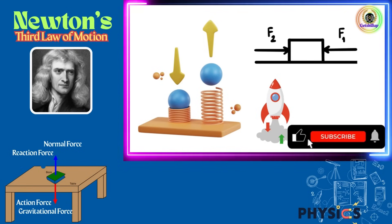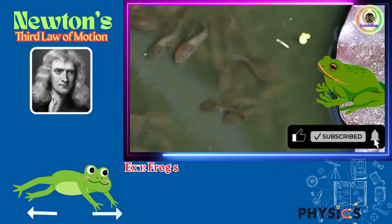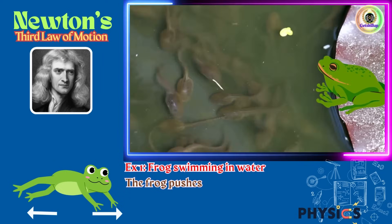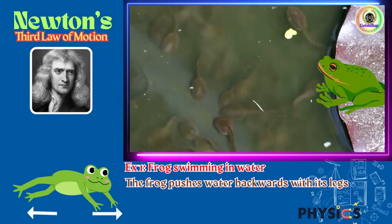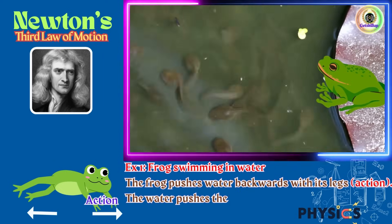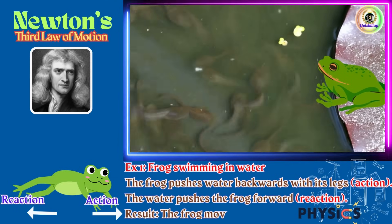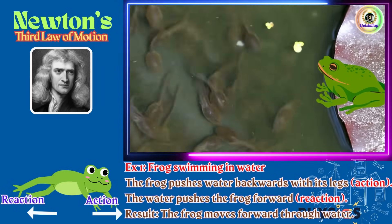Let's look at some real life examples. Example 1: Frog swimming in water. The frog pushes water backwards with its legs - action. The water pushes the frog forward - reaction. Result: The frog moves forward through water.